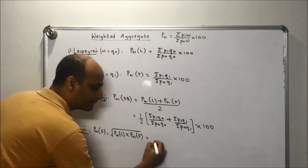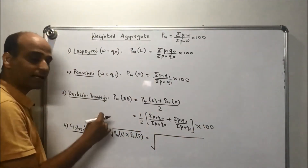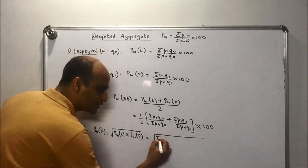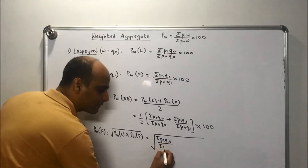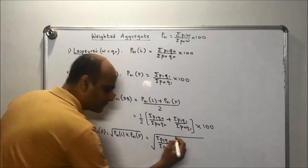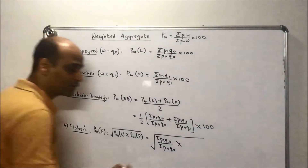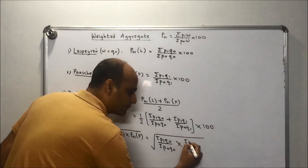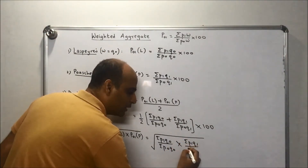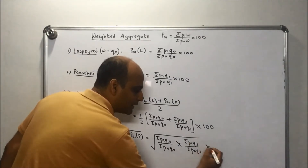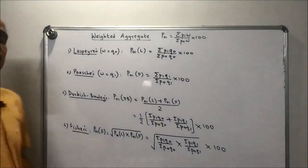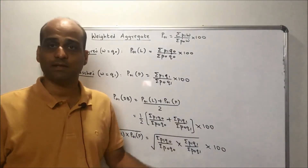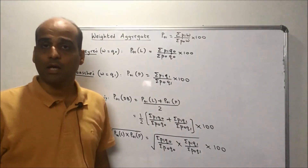We can write the detailed formula for Fisher's as well: square root of the Laspeyre's ratio (summation p1·q0 upon summation p0·q0) times the Paasche's ratio (summation p1·q1 upon summation p0·q1), then multiplied by 100. These are the first four price indices under the weighted aggregate method.